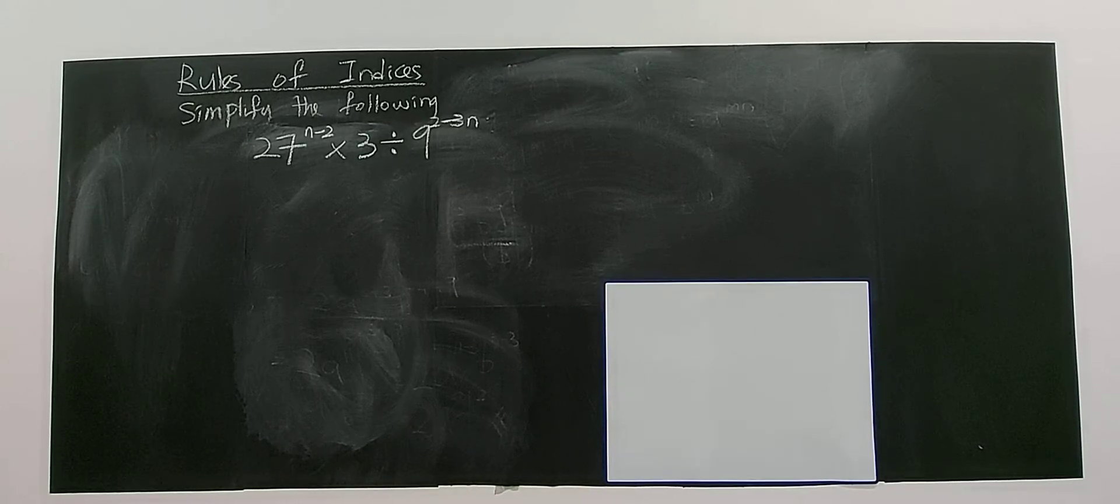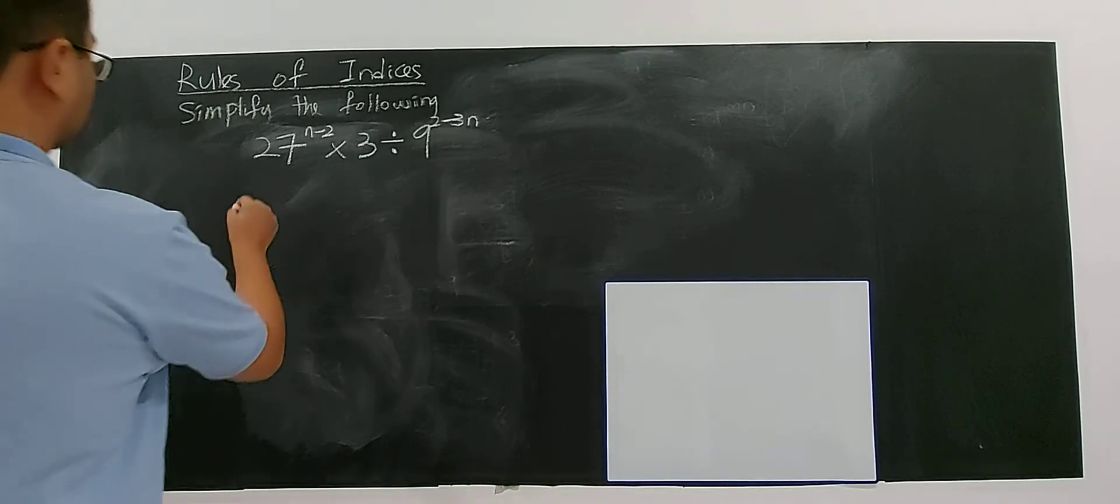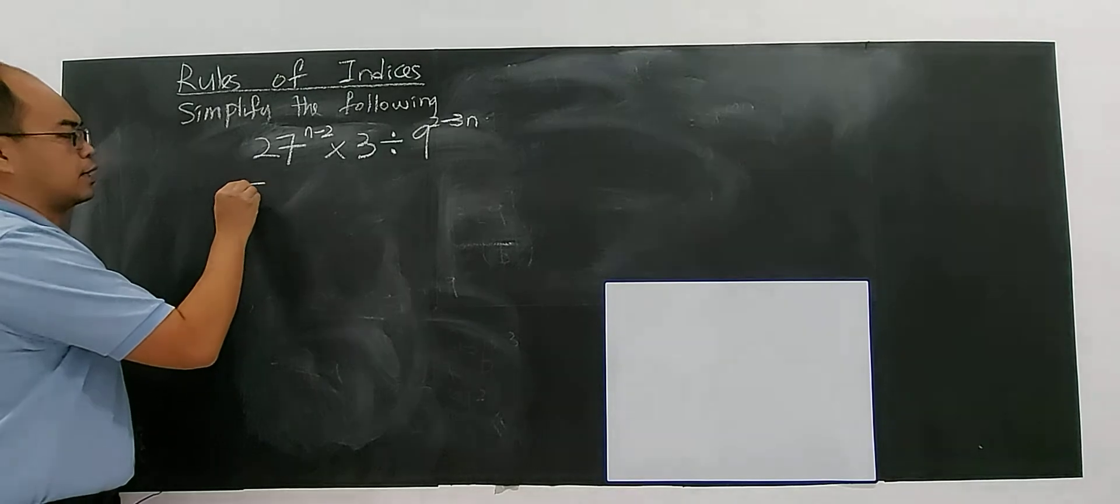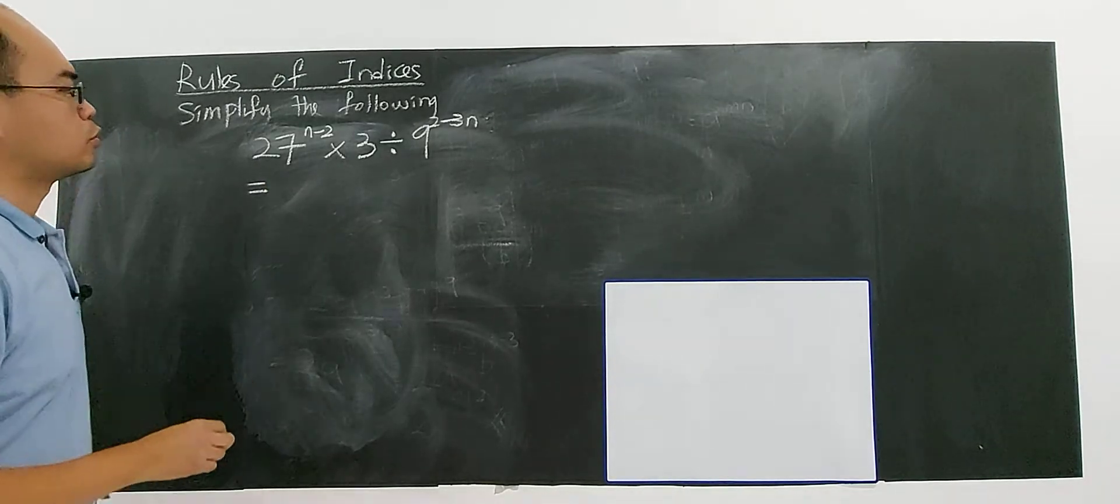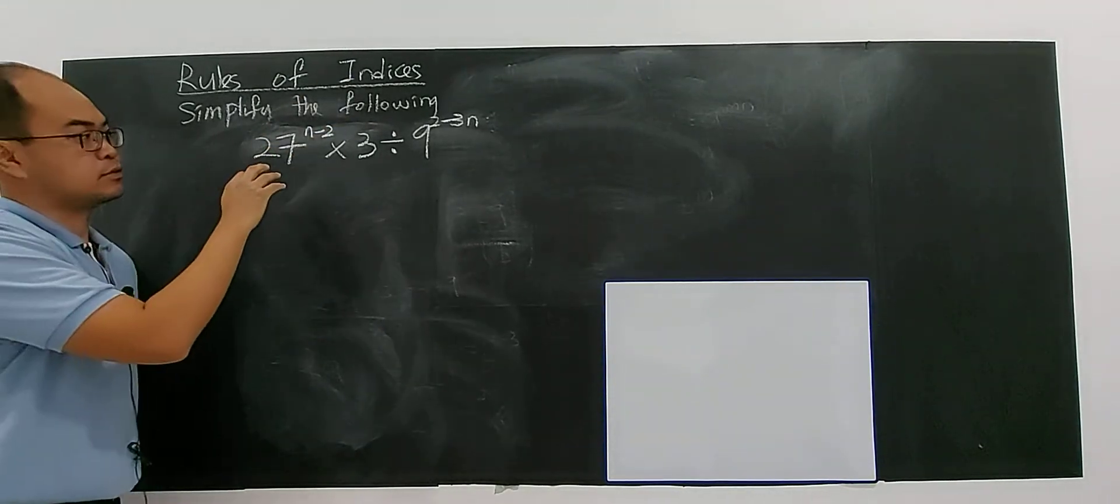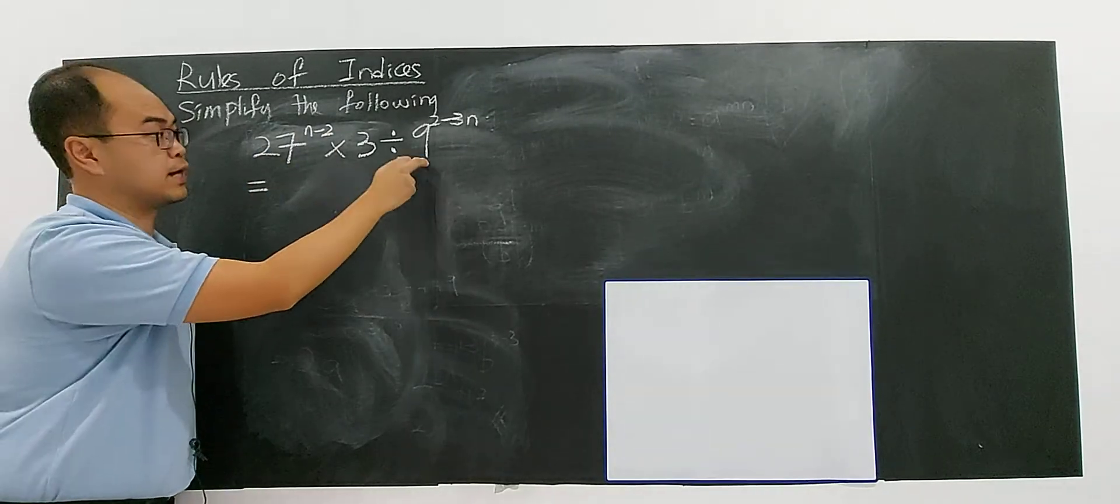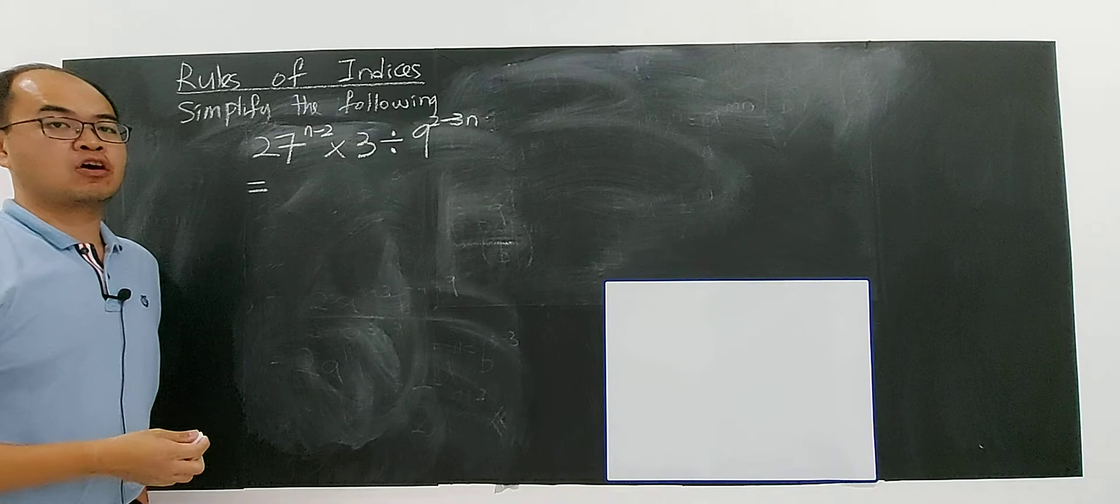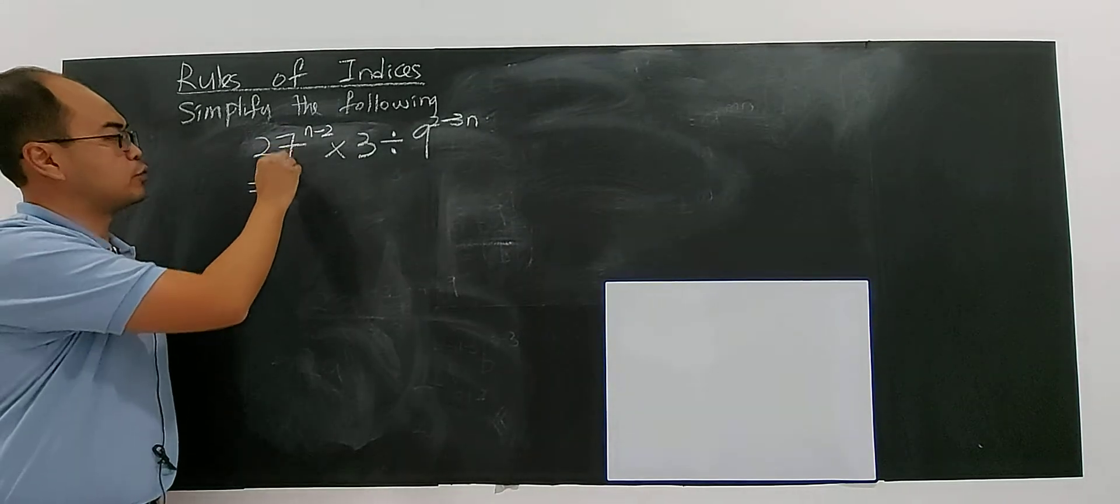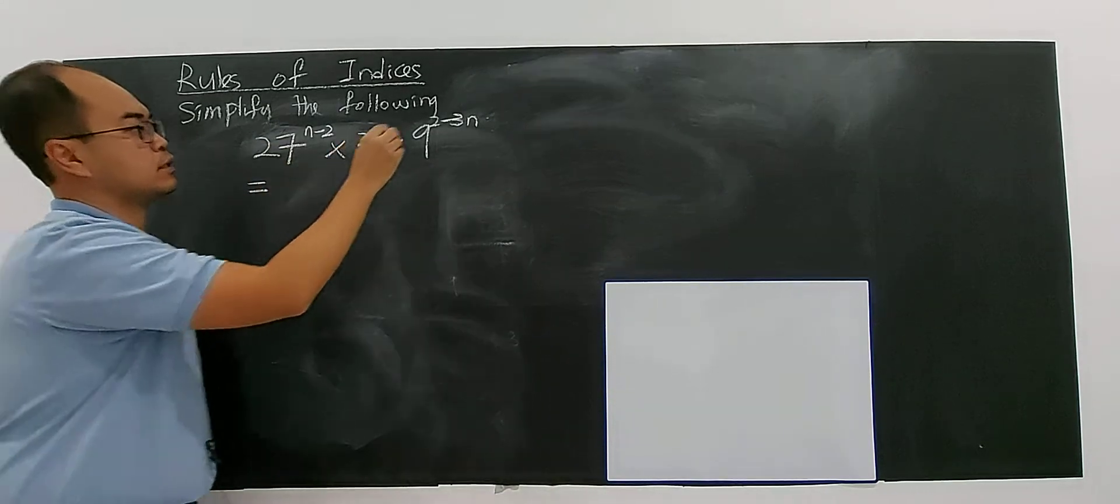Hello, alright. For this example, how to solve? So observe first, you see 27, 3, 9 - they actually have a common base, which is 3.